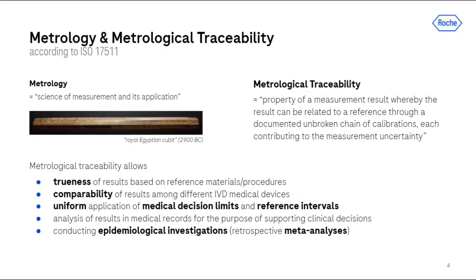ISO 17511 is all about metrology, the science of measurement, and metrological traceability — the unbroken traceability chain from a result back to its reference. The first metrological standard was established by the ancient Egyptians back in 2900 BC, who defined a certain length with the so-called royal Egyptian cubit, which helped them to highly precisely build their monuments like the pyramids. Metrological traceability allows and guarantees trueness and comparability of results, uniform decision limits and reference intervals, and method-independent epidemiological investigations and meta-analysis.